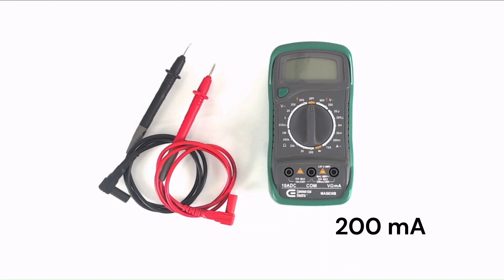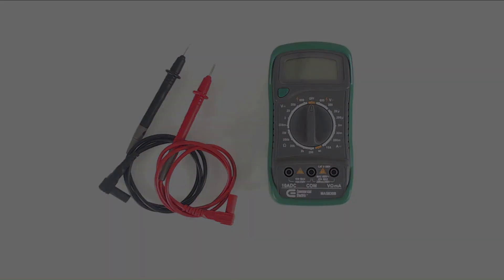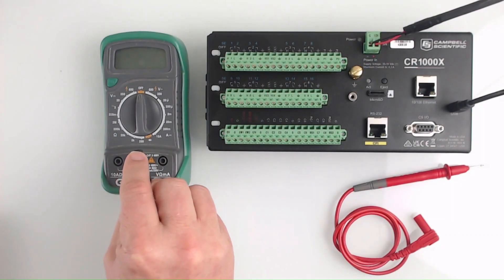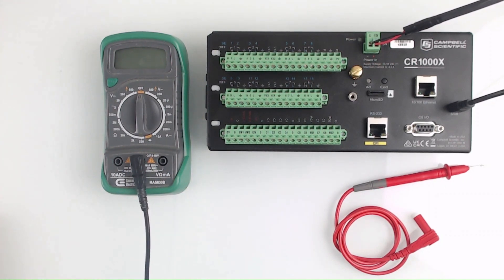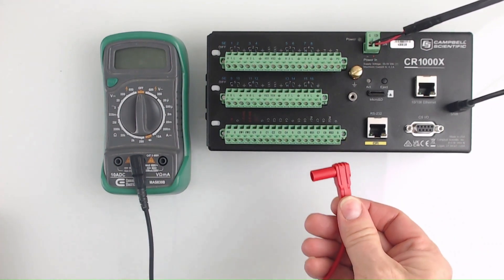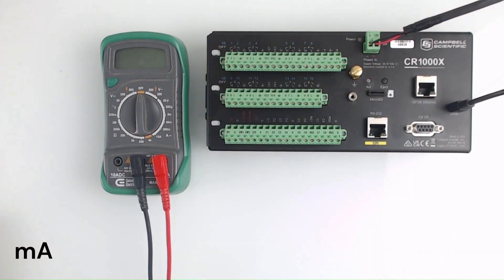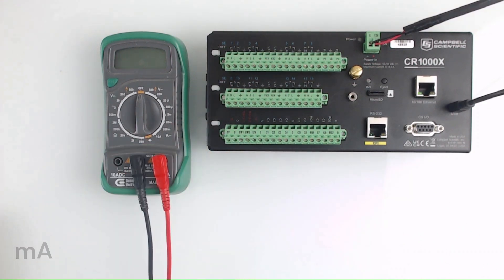To prepare for the measurements, push the connector for the black probe into the socket labeled COM, and the connector for the red probe into the socket labeled V Omega MA. MA means milliamps. Finally, turn the selector knob to measure current at the largest range available for the input jack being used. The multimeter is now ready to be placed in series with the circuit.